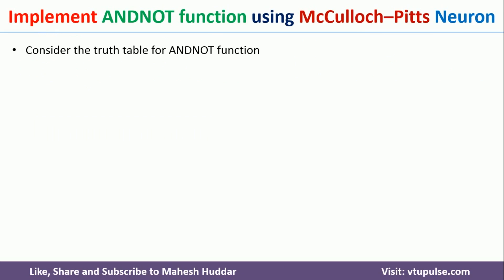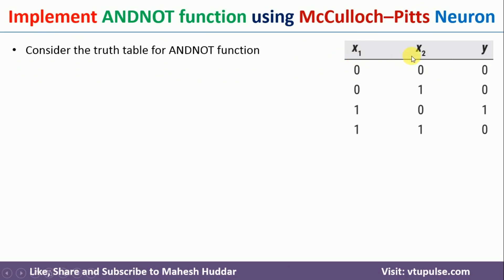The truth table of AND-NOT function looks something like this. We have two inputs, x1 and x2, and y is the output. Whenever x1 is 0 and x2 is 0, the output is 0. If x1 is 0 and x2 is 1, the output is 0. If x1 is 1 and x2 is 0, the output is 1. If both x1 and x2 are 1, the output is 0. This means we need to design a McCulloch-Pitts Neuron such that the neuron will fire only when x1 is 1 and x2 is 0.